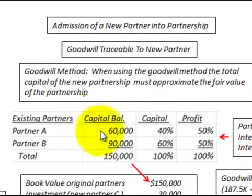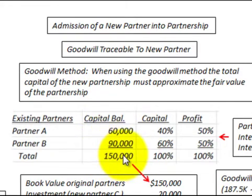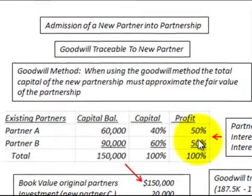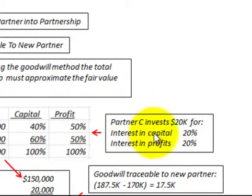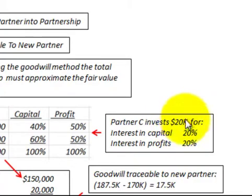Looking at our example, we have an existing partnership with partner A and partner B, and they have a total capital balance of $150,000. Their profit is allocated 50-50, 50% to A and 50% to B. Now we have partner C who is going to enter this partnership. They're going to make an investment of $20,000, and they're going to have a capital interest of 20% and an interest in profits of 20% for making this $20,000 investment.